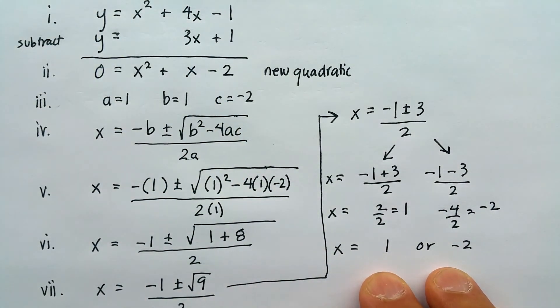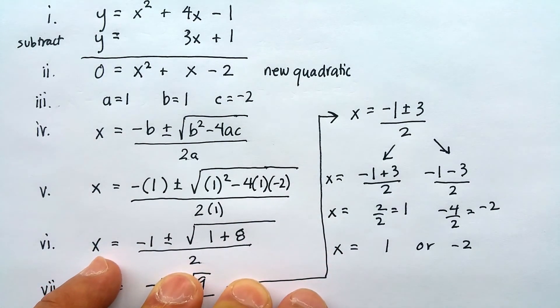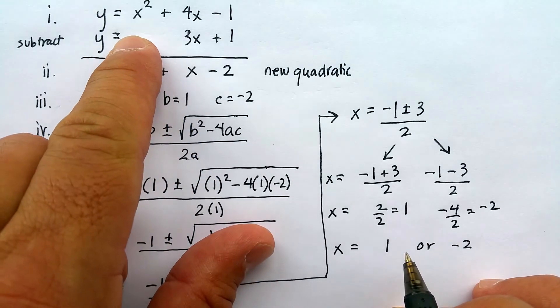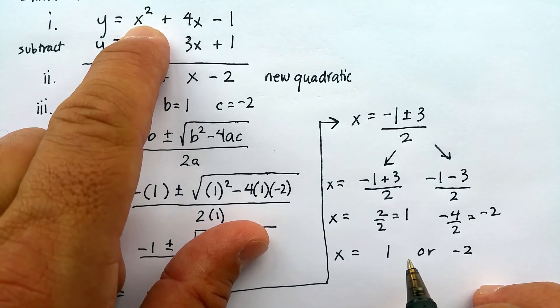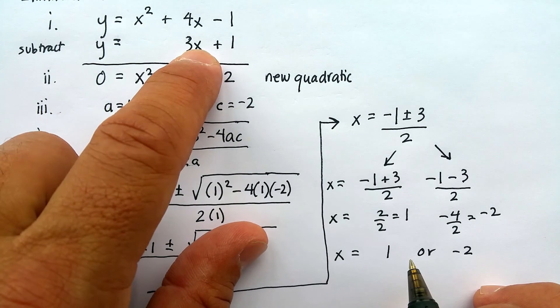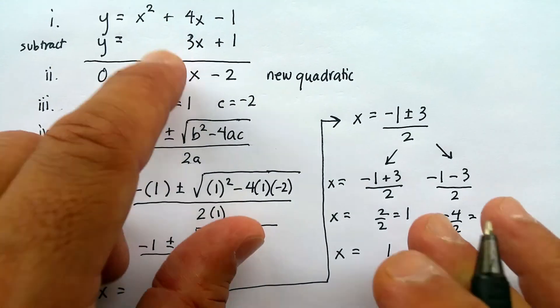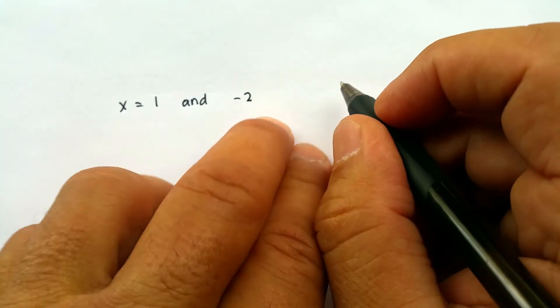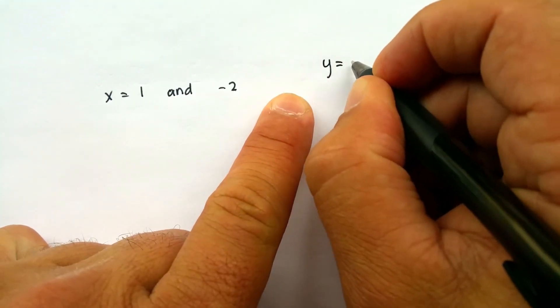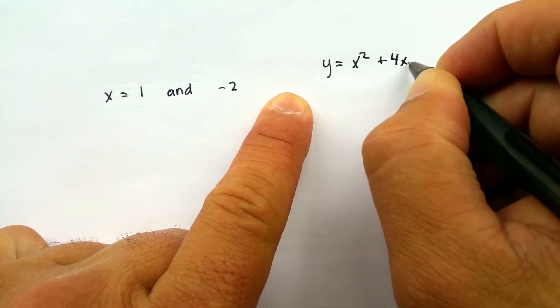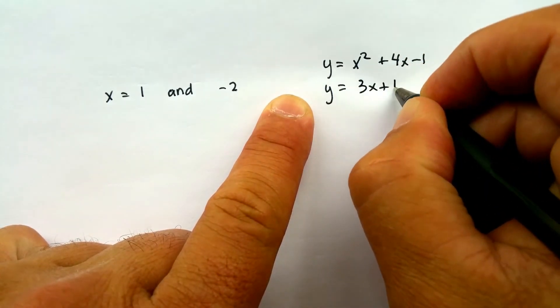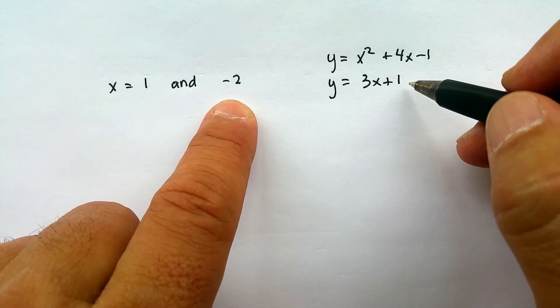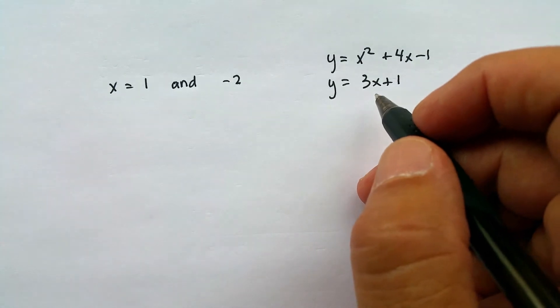That doesn't tell me where the equations cross yet — it just gives me x-values. What I'm going to do is take these two possible x-values and substitute them back into one of the two original equations, because both equations share the same intersection points. I'll take the easier one — the linear equation.